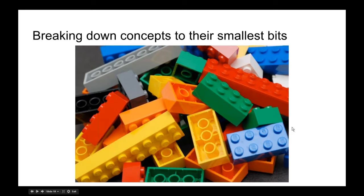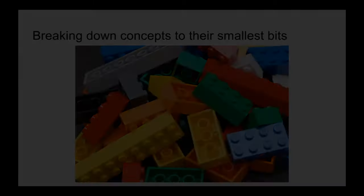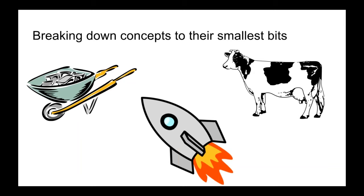So how do we get to these attributes? The first thing we want to do is break down our subject — the thing we want to represent — into its smallest bits. We have three examples here: a wheelbarrow, a cow, and a cartoon rocket ship. I'll ask everyone to turn their mic on and volunteer some attribute ideas.